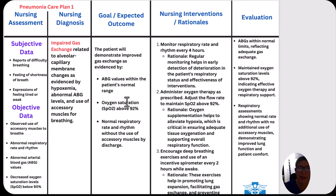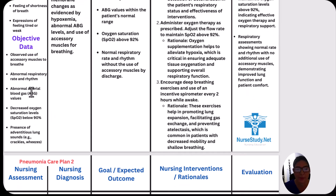Subjective data, which is what the patient reports, will be: reports difficulty breathing, shortness of breath, and expressions of feeling tired or weak. The objective data is the data that we can see or measure: use of accessory muscles to breathe, abnormal respiratory rate and rhythm, abnormal ABG values, decreased O2 sat usually below 90, and presence of adventitious lung sounds like crackles and wheezes.